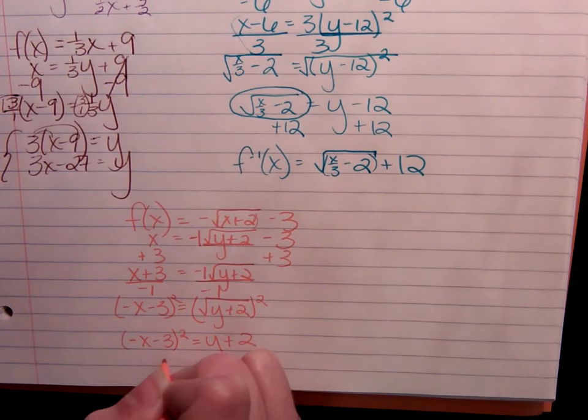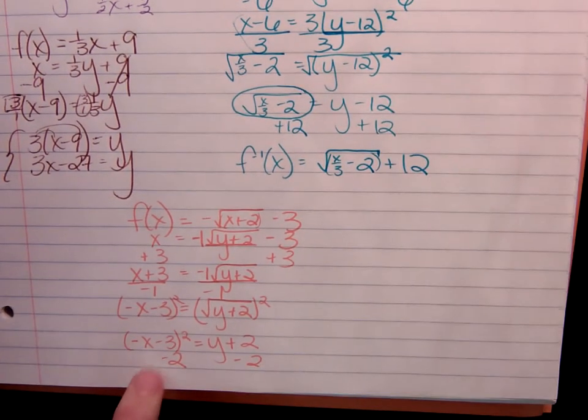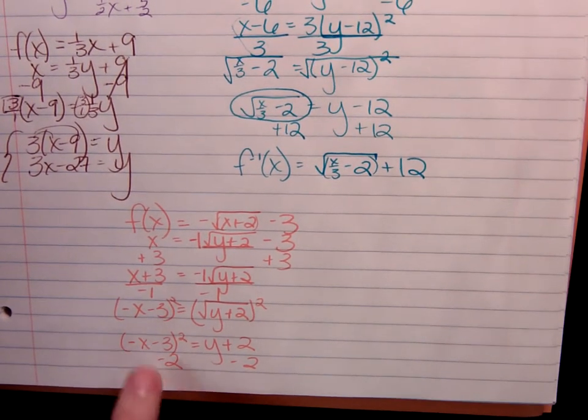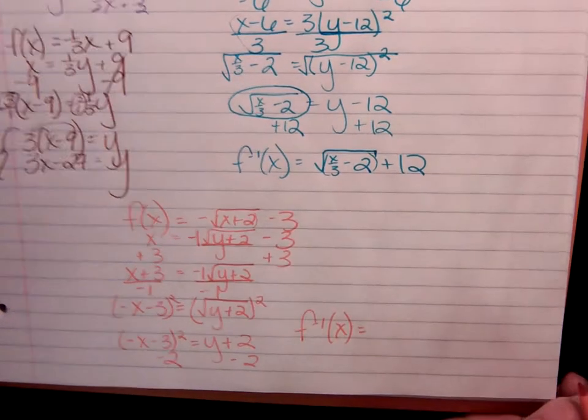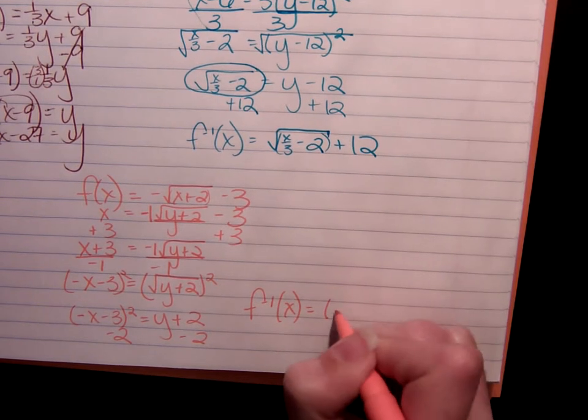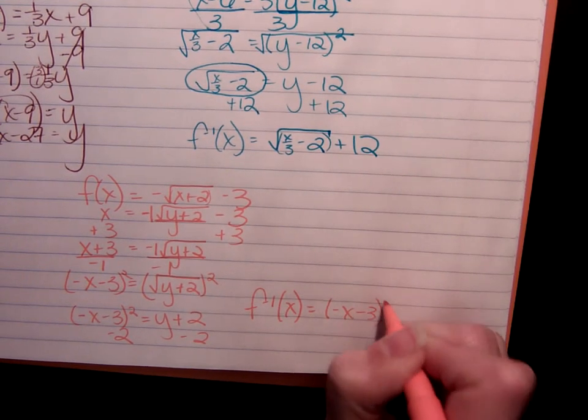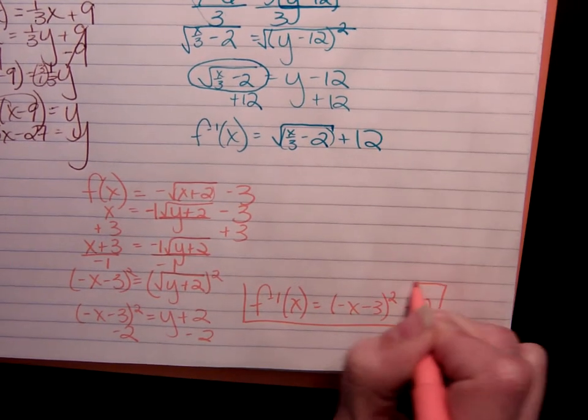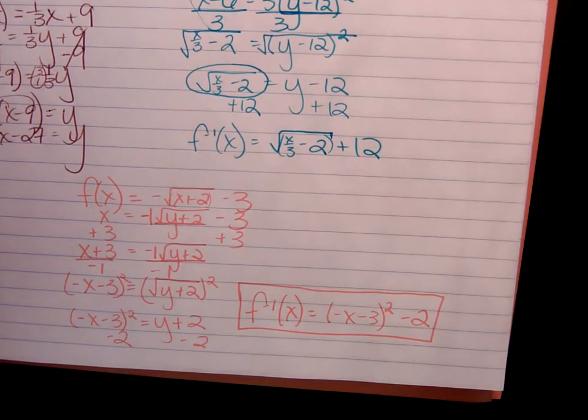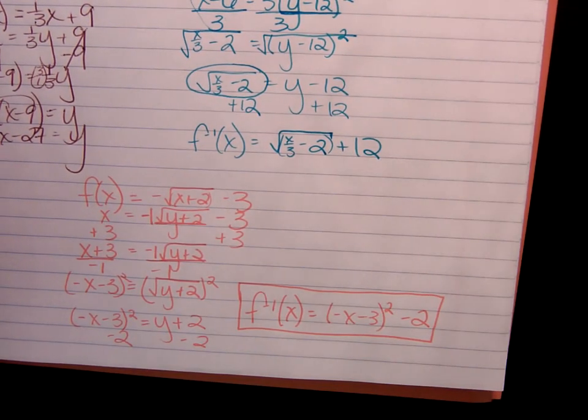Subtract the 2. And here it's a little bit easier to see. This is definitely separate from what's going on there. So to write my inverse function, the quantity negative x minus 3 squared minus 2, and we're all finished. You're finished. Okay. Good night.